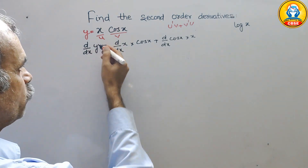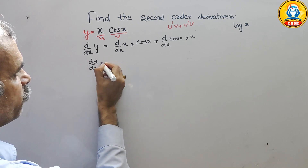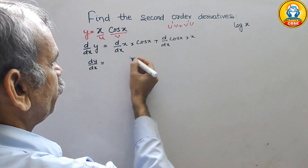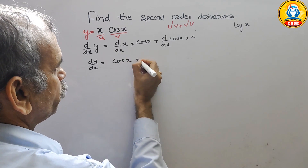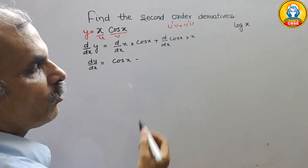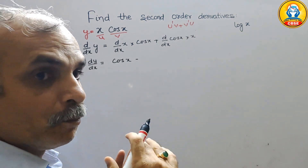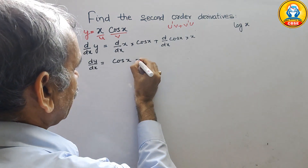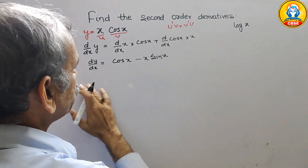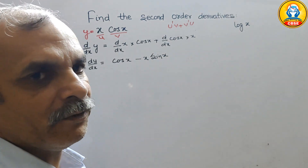So here we apply that: d by dx of x into cos x plus d by dx of cos x into x. If you differentiate this, you get dy by dx equals — dx by dx is 1 — so you get cos x, and d by dx of cos x is minus sin x into x, giving minus x sin x. So this is your first derivative.